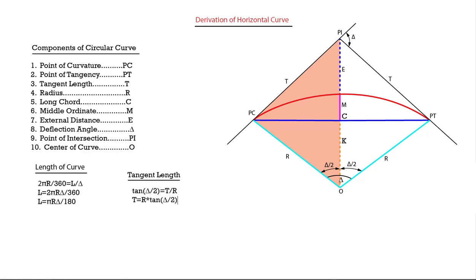From the triangle, the tangent length T is equal to the radius R times the tangent of delta over 2.